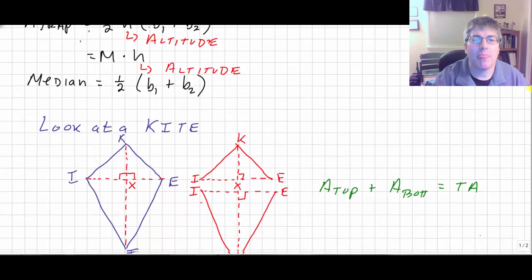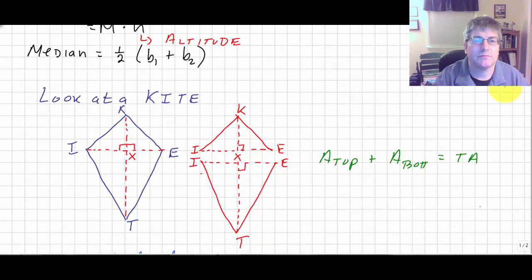Now let's take a look at a kite. In a kite we know that the diagonals—one of the diagonals is the perpendicular bisector of another.